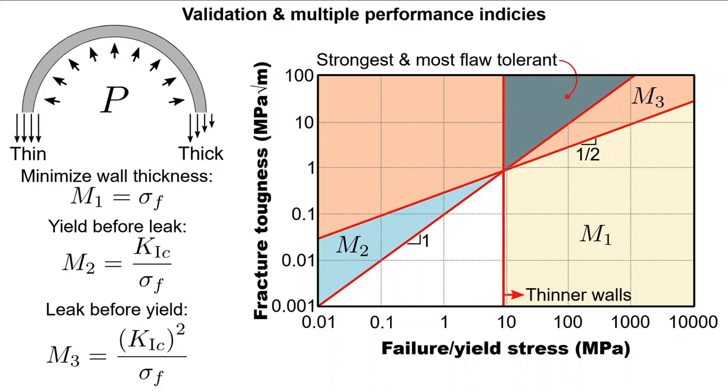Furthermore, a potential locus of materials, which can be employed to satisfy both yielding before leaking, as well as leaking before yielding, which will be the strongest and the most flaw-tolerant. We can then rank the materials according to which is more important, either yielding or leaking. It might seem that this is the culmination of this entire approach, but there is one more step. Validation.